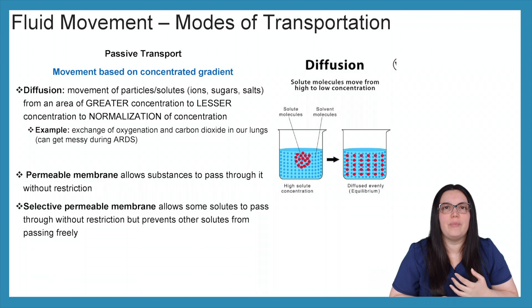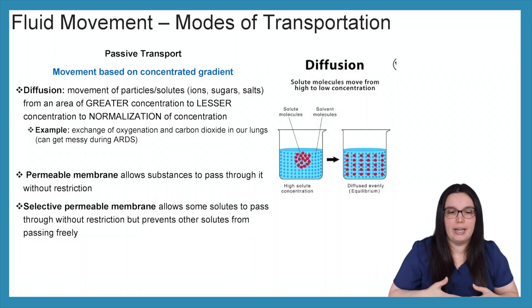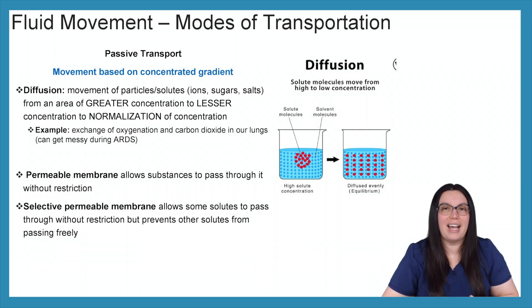We have two different kinds of membranes. We either have a permeable membrane or a selective permeable membrane. The permeable membrane allows substances to pass through without any restriction, whereas with our selective permeable membrane it allows some solutes to pass through without restriction but prevents other solutes from passing freely.